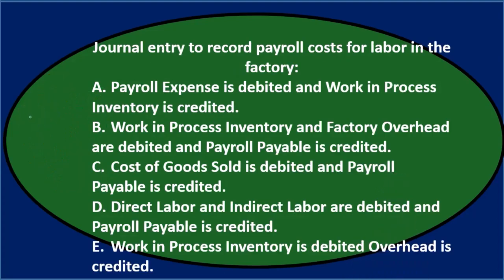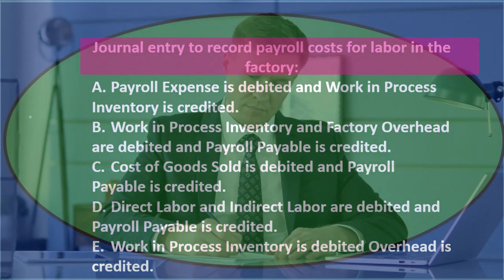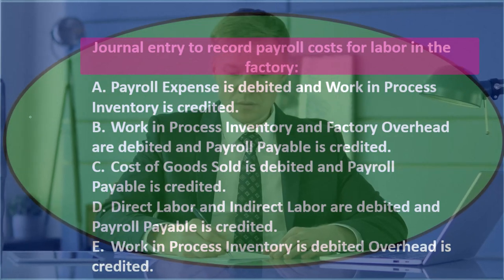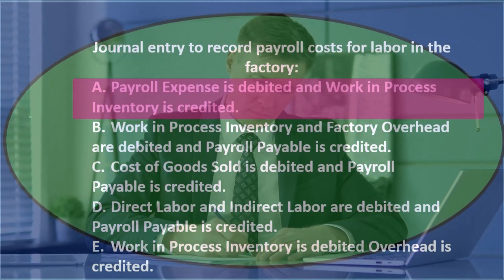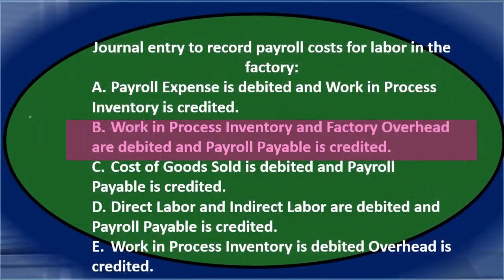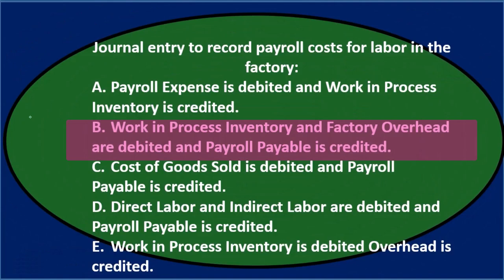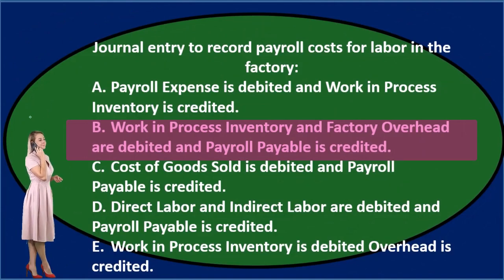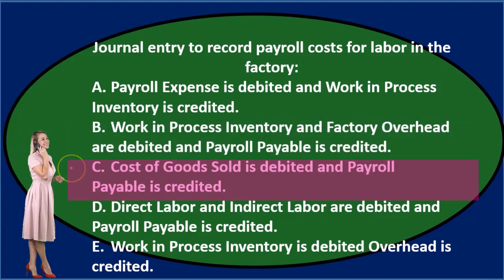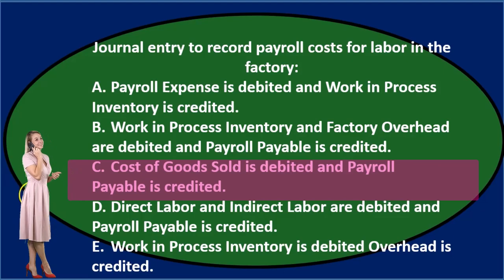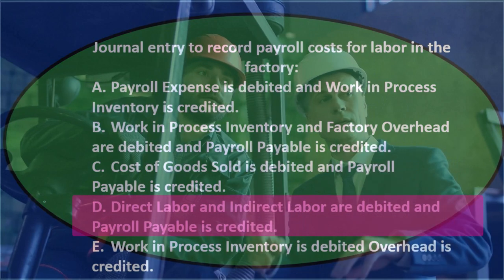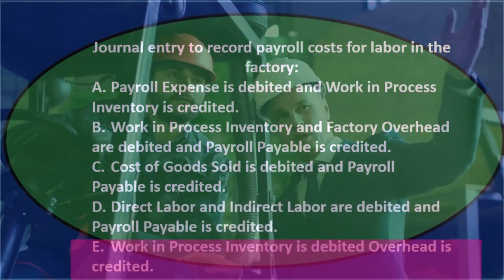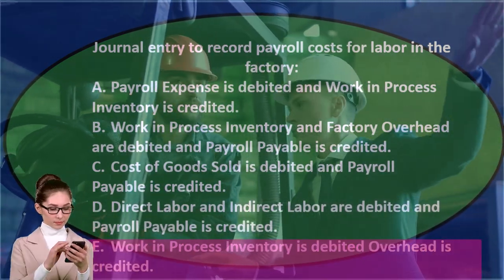Next question: Journal entry to record payroll costs for labor in the factory. A. Payroll expense is debited and work in process inventory is credited. B. Work in process inventory and factory overhead are debited and payroll payable is credited. D. Direct labor and indirect labor are debited and payroll payable is credited. E. Work in process inventory is debited and overhead is credited.